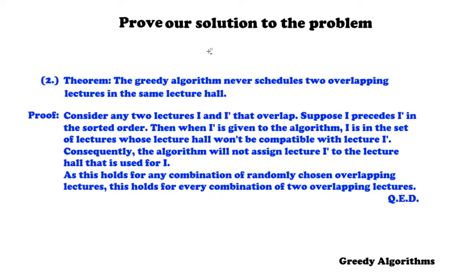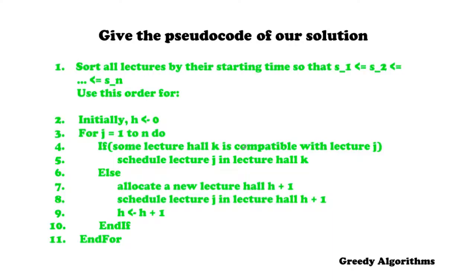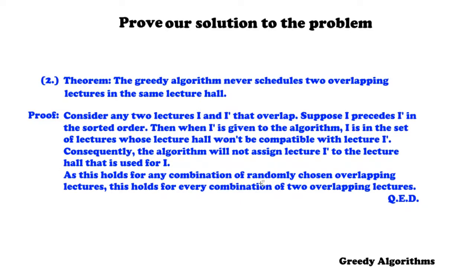Theorem 2: the greedy algorithm never schedules two overlapping lectures in the same lecture hall. Proof: consider any two overlapping lectures i and i', where i precedes i' in sorted order. When i' is processed, lecture i is already assigned to some hall, making that hall incompatible with i'. Consequently the algorithm will not assign i' to the hall used for i. Since this holds for any pair of overlapping lectures, it holds for all such pairs. Q.E.D.